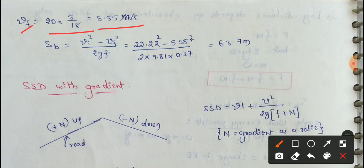So SB brake distance VI square minus VF square by 2GF. So VI square is 22.22 square minus VF square 5.55 square by 2 into gravity 9.81 into coefficient of longitudinal friction value 0.37.